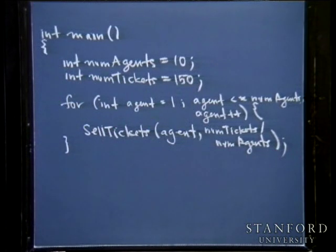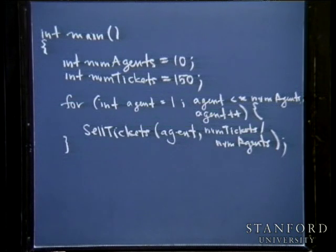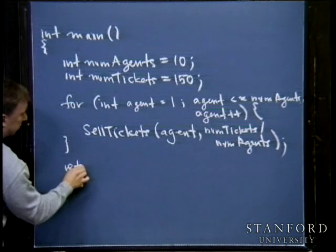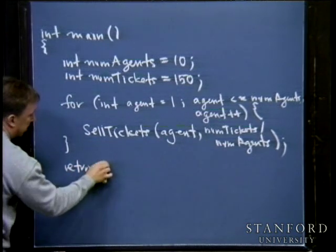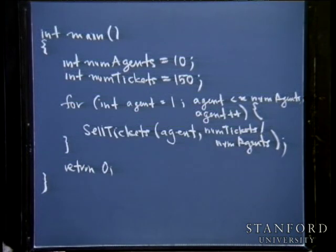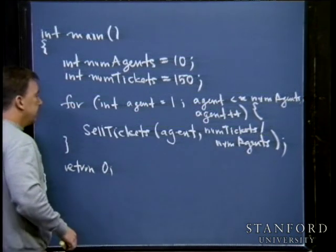Each ticket agent knows they have to sell that many tickets as part of their function call, and then return zero to satisfy the compiler. We're not going to allow anything to go wrong in this simple program. The implementation of sell_tickets is not going to be rocket science.